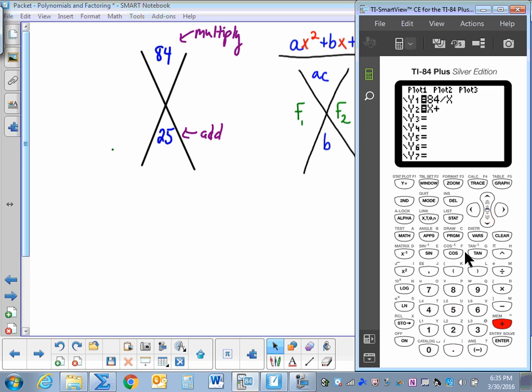Now in this calculator there's a shortcut to get the Y1. So we're going to hit the alpha key and F4, which is the trace key. As you can see, a menu comes up and we want Y1, so we're just going to hit enter. So now we've told the calculator to factor the number 84 and then to add the factors together for us.